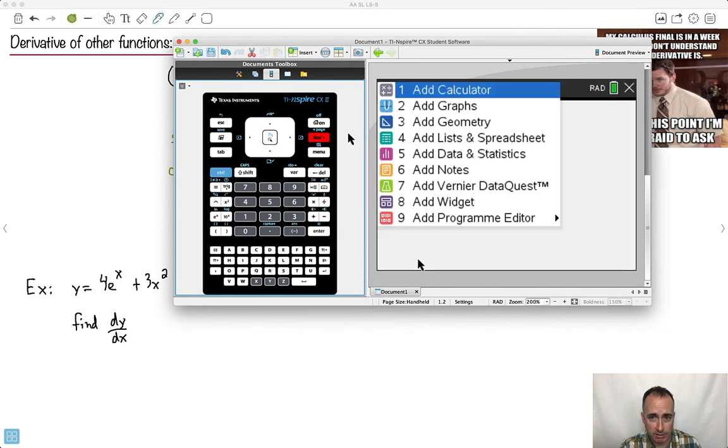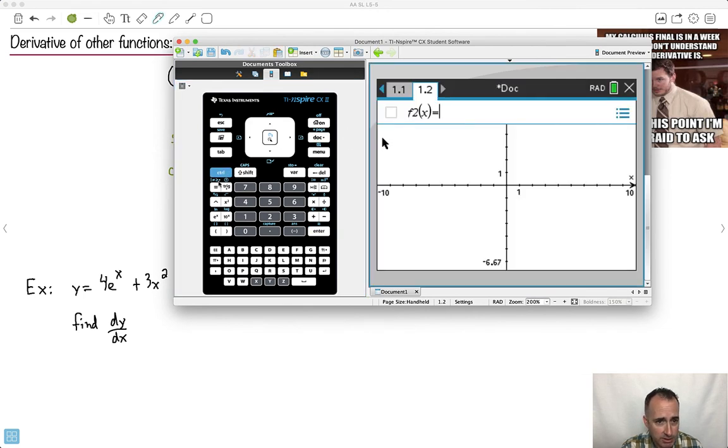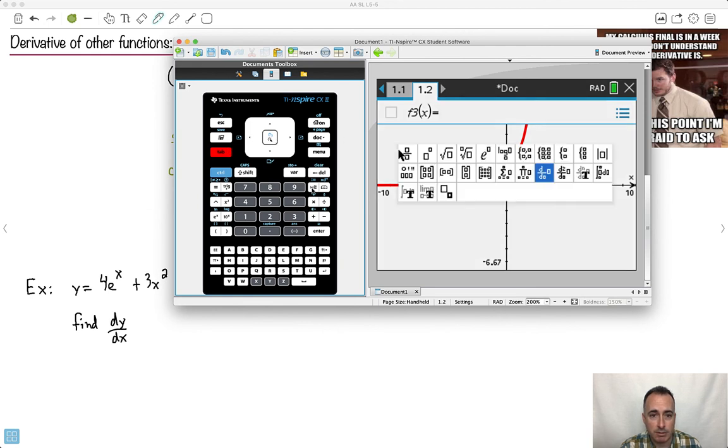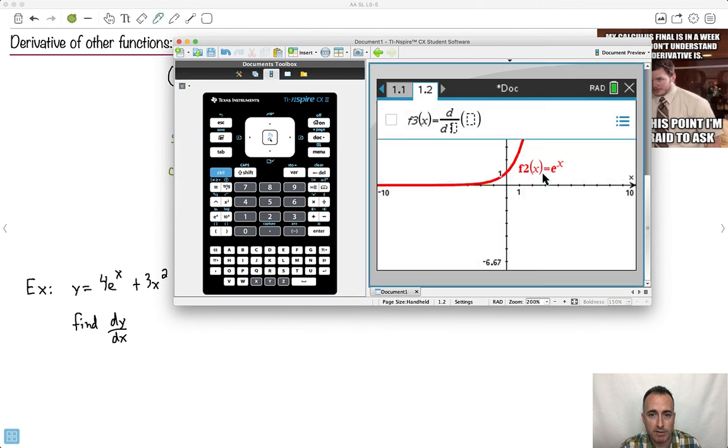So what I mean by this is, watch. What if I go here? I do a new page. I'll do a graph. And I'll do e to the x. Let me just do that one. So e to the x. So there's the function itself. Now what I'm going to try to do is graph, let's see here. I'll do this right here. Template. I'll graph the derivative.